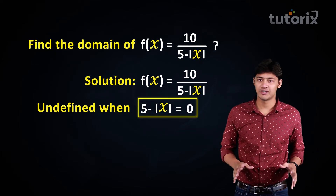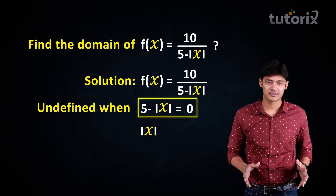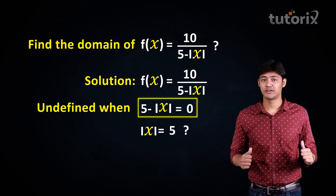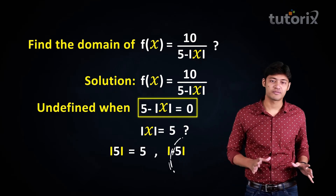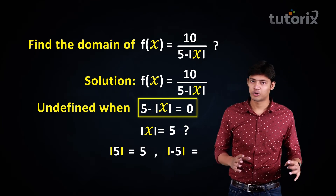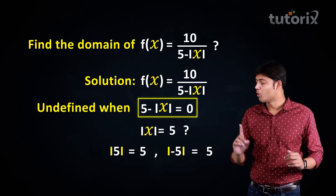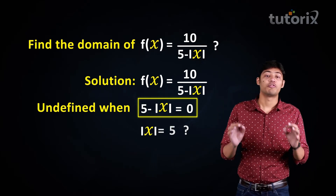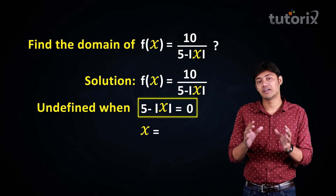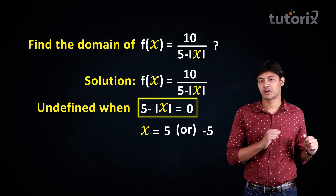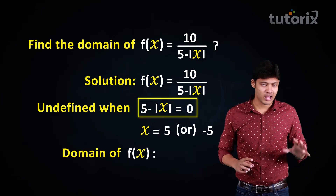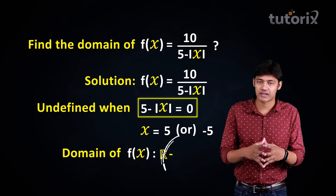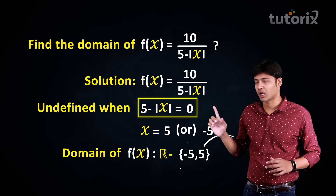When is |x| equal to 5? We know that |5| equals 5 and |−5| also equals 5. So |x| equals 5 for x equal to either 5 or minus 5. Therefore, the domain of f(x) is the set of all real numbers minus the set {−5, 5}.